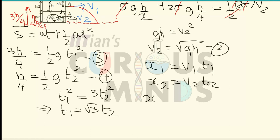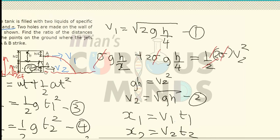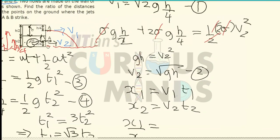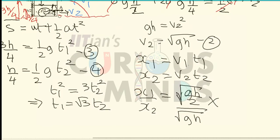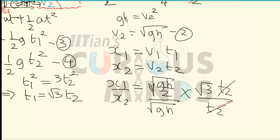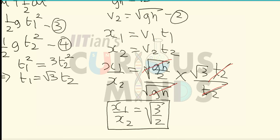Taking the ratio x1/x2 = (V1·t1)/(V2·t2). Here V1 = √(gh/2) and V2 = √(gh), and t1 = √3·t2. Substituting, the t2 terms cancel and √(gh) terms cancel, giving x1/x2 = √(gh/2)/√(gh) · √3 = (1/√2)·√3 = √3/2. So the ratio of horizontal distances is √3 : 2.